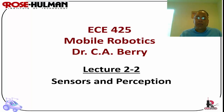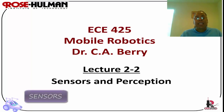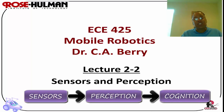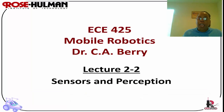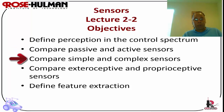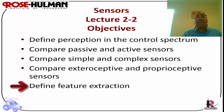Hello and welcome back. Today we will do lecture 2-2, Sensors and Perception. The purpose of this lecture is to describe the role of sensors and perception in robot control. The objectives of today's lecture are to define perception in the control spectrum, to compare passive and active sensors, to compare simple and complex sensors, to compare exteroceptive and proprioceptive sensors, and to define feature extraction.